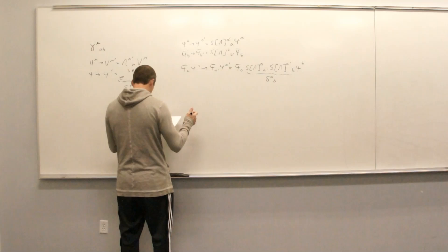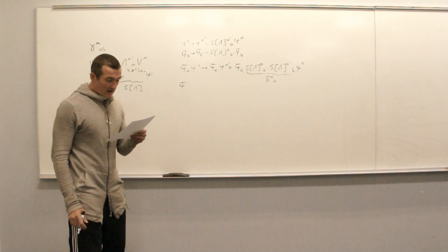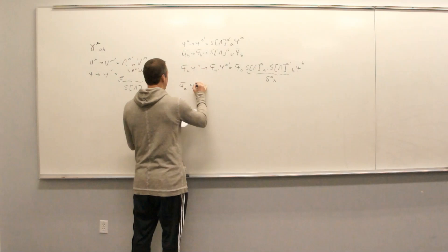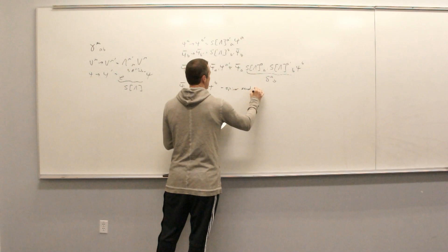We're going to label gamma with its indices and carry this through. What I want to consider is what is often called a spinor sandwich. This is one of the reasons I'm nervous today because I spell sandwich wrong. But this is a spinor sandwich.